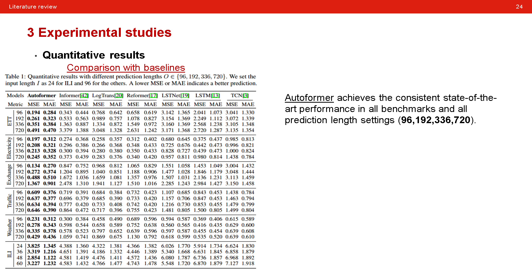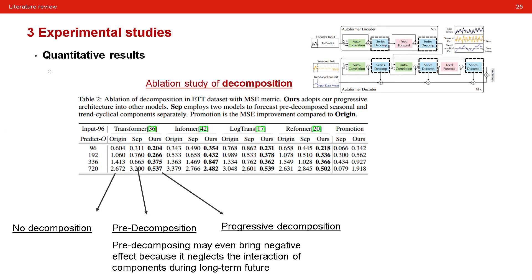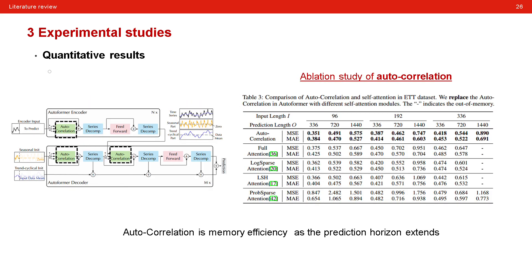They also implement two ablation studies. The first one is the ablation study of decomposition. They compare three decomposition schemes including no decomposition, pre-decomposition, and the proposed progressive decomposition. And notably, the pre-decomposition means that they decompose the input in advance and then input to the model. As you can see, the pre-decomposition may even bring negative effect because it neglects the interaction of components during long-term future.